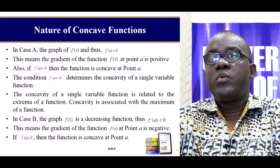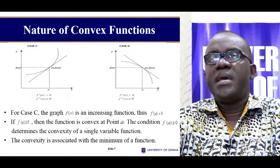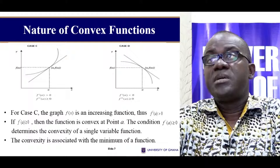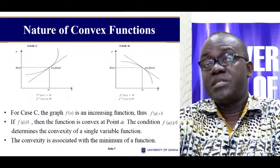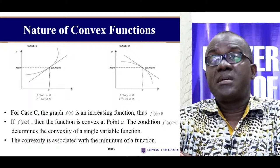In the case of a convex function, what may happen is that we'll have the tangent below. You can see it is a convex function — the tangent is below. There's an increasing function; that's why we have the first-order differential greater than zero. This is a decreasing function, and the tangent is above the graph.